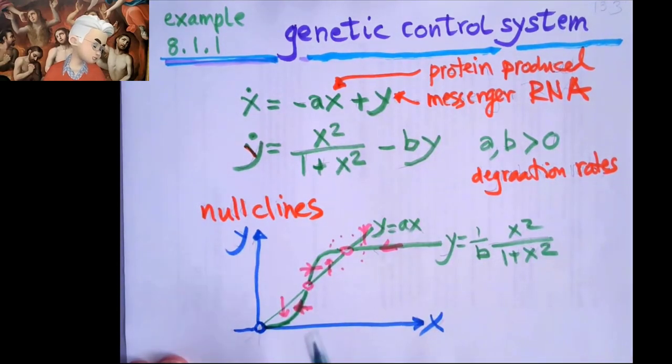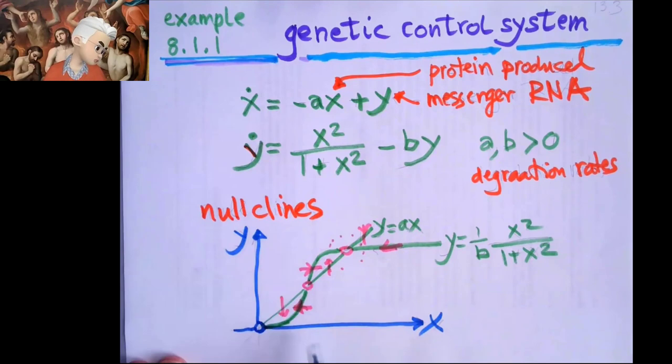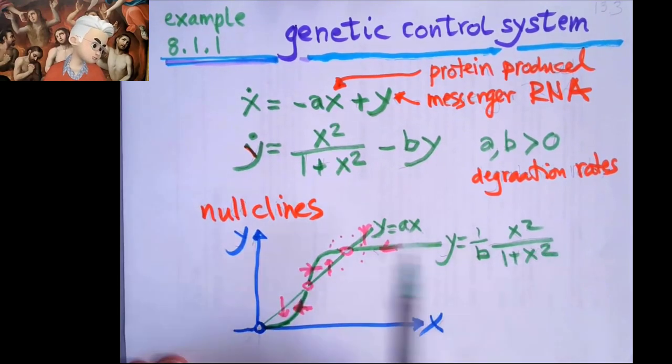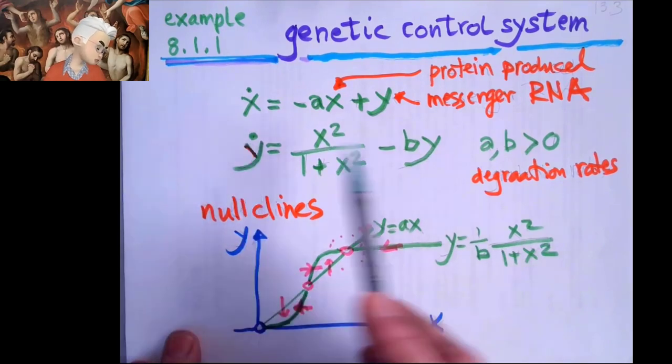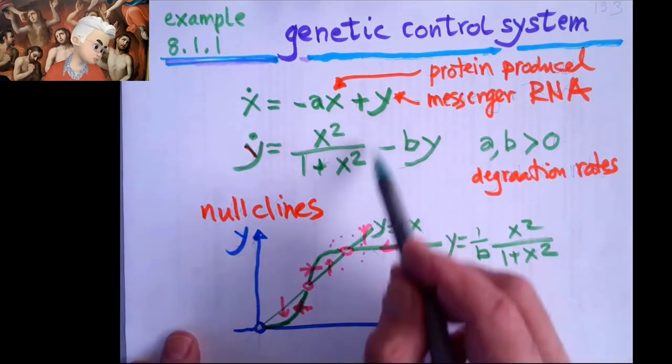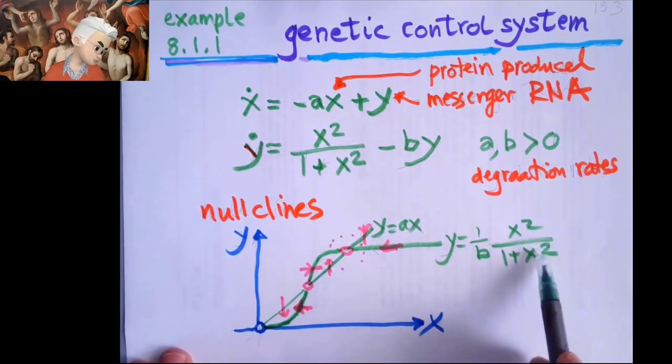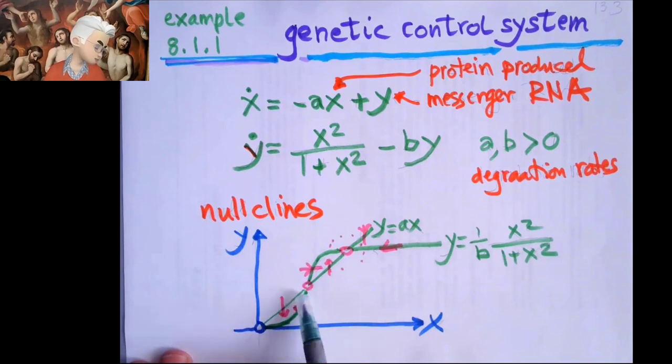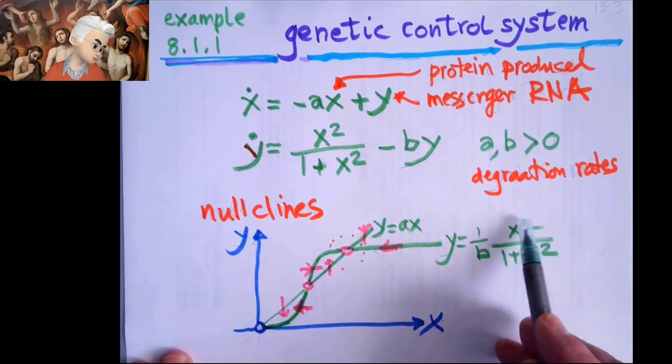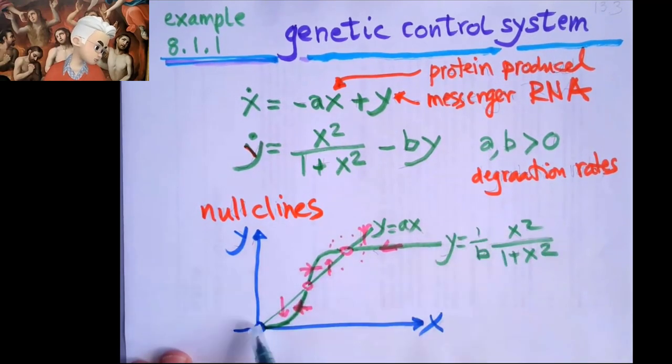And the second null clines, when I only want to have horizontal velocity, nothing vertical, is if I said this is equal to zero, y is just 1 over b. So it's on this side. And this equation has a property that when x is small, it starts as a quadratic term. It's a coefficient, the curvature coefficient, controlled by b.